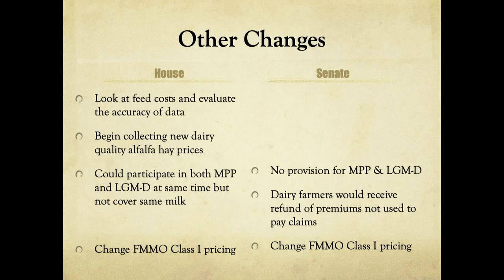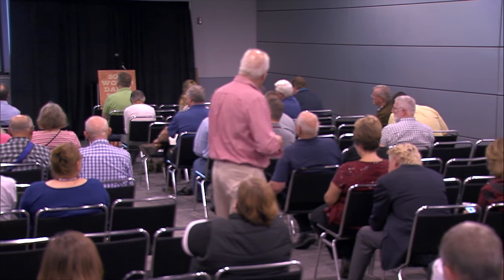Under the House version, you could participate in both LGM Dairy and MPP simultaneously, protecting different portions of your milk under each — say 40% under LGM Dairy and 50% under MPP — as long as you don't cover more milk than your historic production. Under the Senate version, it's pick a lane: either LGM Dairy or MPP, not both — but since it's an annual choice, you could do MPP one year and LGM Dairy the next.